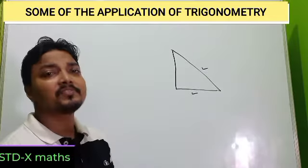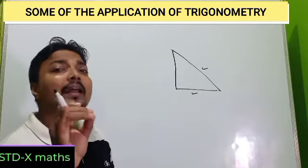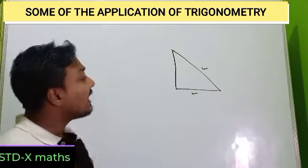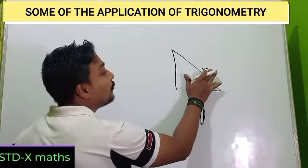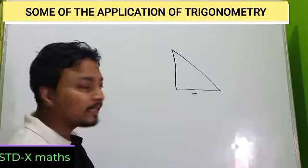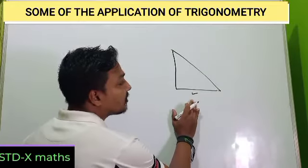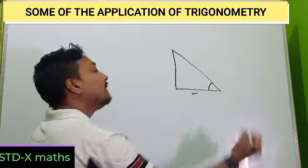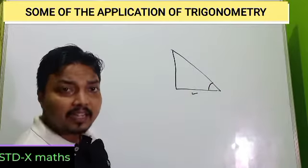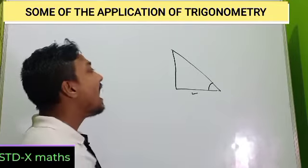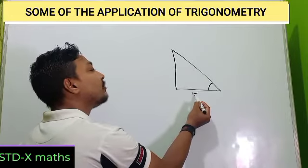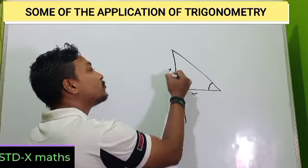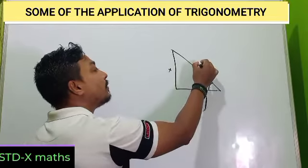But in this chapter, basically our application will be: whenever one side is given and any trigonometric ratio is given, how to find out the other side. It means a single side and a single angle are given — how to find out this side or that side.